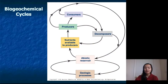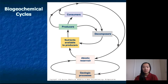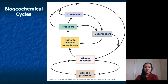So this is kind of where we left off. This is a basic framework of biogeochemical cycles — talking about how nutrients are going to be traveling from abiotic reservoirs. Abiotic refers to the non-living factors in an ecosystem, and so nutrients are going to travel from abiotic reservoirs to biotic reservoirs.